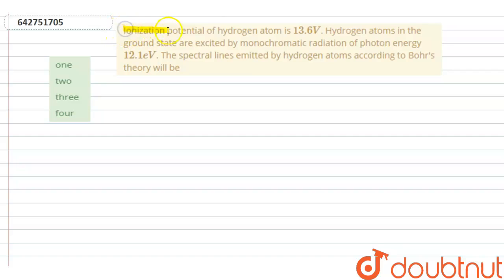Ionization potential of hydrogen atom is 13.6 volts. Hydrogen atoms in the ground state are excited by monochromatic radiation of photon energy 12.1 eV. Now find the spectral lines emitted by hydrogen atom according to Bohr's theory.